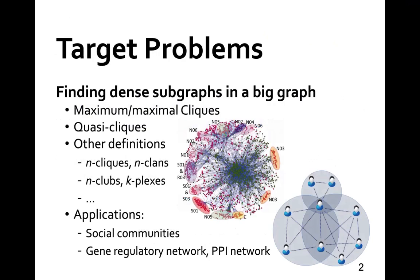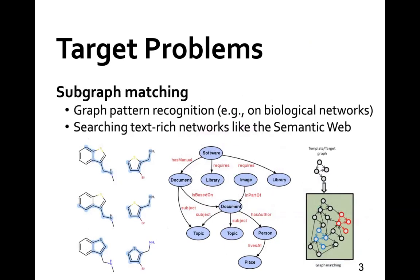Let me introduce our target problem: to find qualified subgraph instances from a big graph. One example is to mine dense subgraph structures, such as cliques, quasi-cliques that require each node to be connected to the majority of other nodes, and many other dense subgraph definitions. Another example is subgraph matching, where we are given a query graph and want to find subgraph instances that match it in a big data graph. This query is useful in searching knowledge graphs and biological networks.